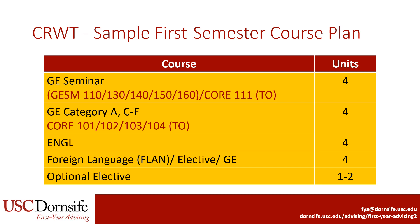This is a sample of what a typical first semester would look like for a Creative Writing major. Students will take a GE seminar, a second GE course, a lower division English course towards their major, and either a foreign language course, third GE course, or a degree elective. You also have the option to take a second major course if you would prefer. Your advisor will prepare a personalized course plan based on any coursework or exams you transferred in prior to starting at USC.